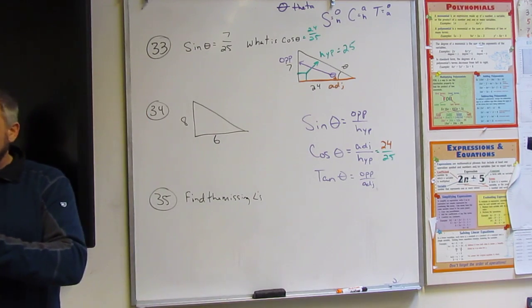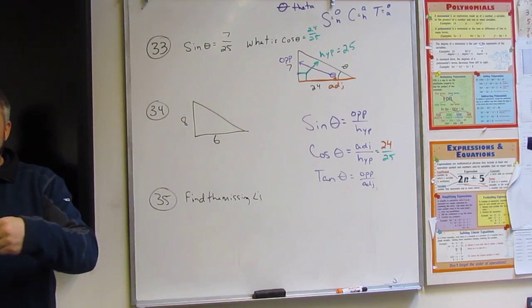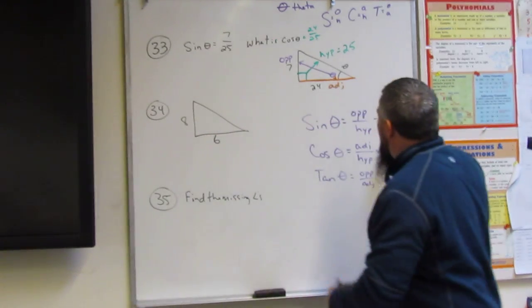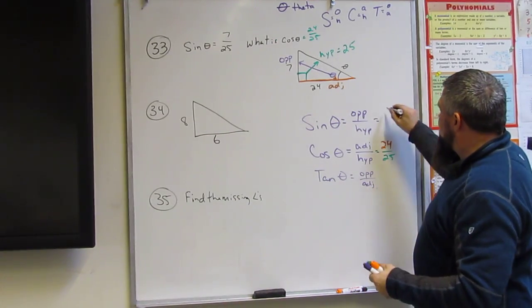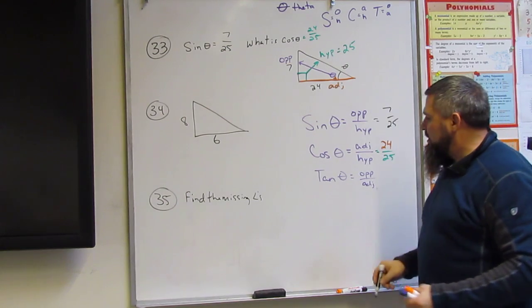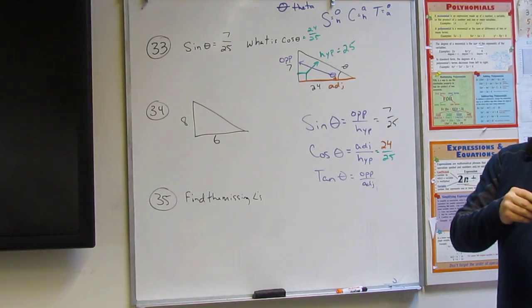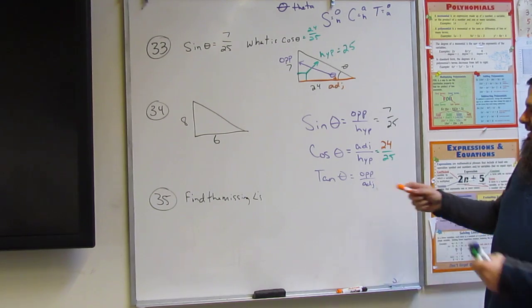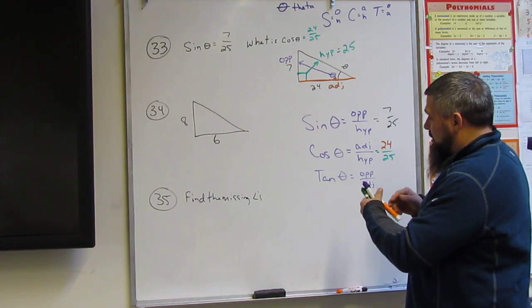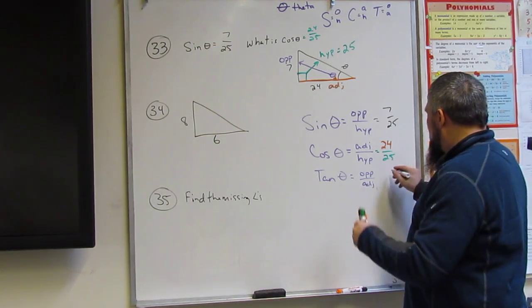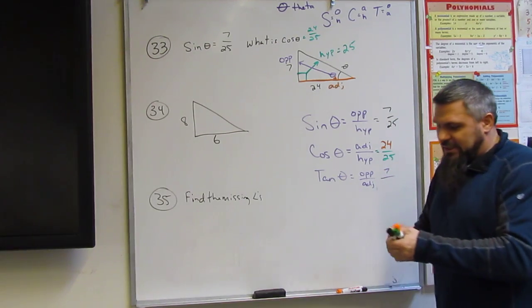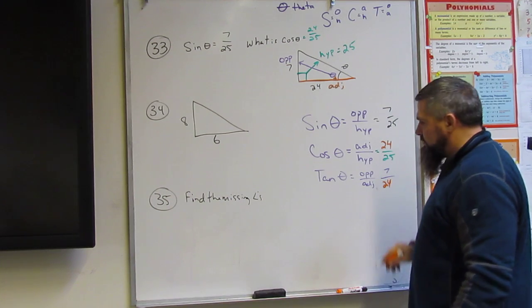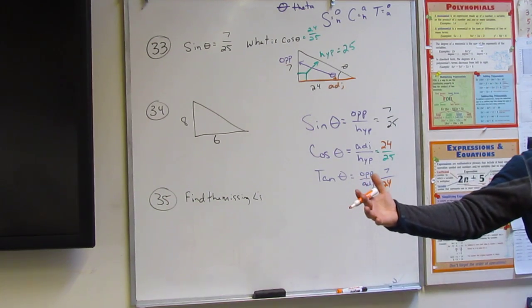What's the sine equal to? Well, it told us 7 over 25. So what's tangent? What's opposite? 7 over adjacent, which is 24.